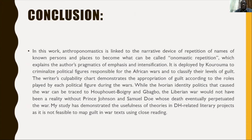I would quickly conclude that my text as deployed has shown how the author used the ranking to criminalize political figures responsible for African wars and to classify their guilt. The writer's culpability chart demonstrates appropriation of guilt according to the roles each person played during the wars. While the Ivorian identity politics can be traced to Houphouët-Boigny and Gbagbo, the Ivorian war wouldn't have been a reality without Prince Johnson and Samuel Doe, who actually caused the war. My study has demonstrated the usefulness of theories in DH-related literary analysis, as it is not feasible to map guilt in word texts using close reading. Thank you very much.